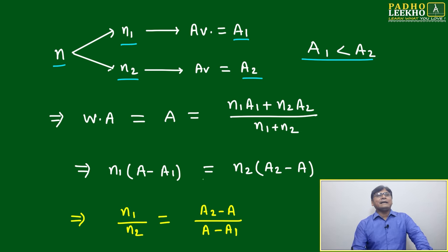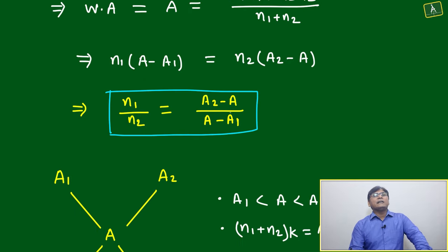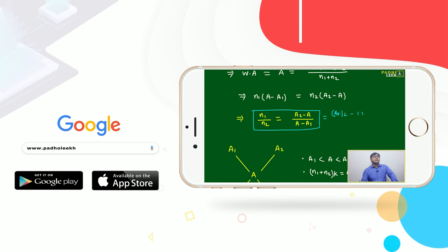Just to segregate, you do the cross multiplication. You will get n1/n2 is equal to (a2 - A) divided by (A - a1). Or you can say average of group 2 minus mean, or mean minus average of group 1, where average of group 1 is less than group 2.